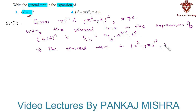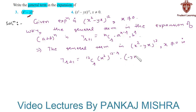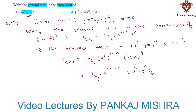T(r+1) = 12Cr × (x²)^(12-r) × (-y/x)^r. This equals 12Cr × x^(24-2r) × (-1)^r × y^r × x^(-r).